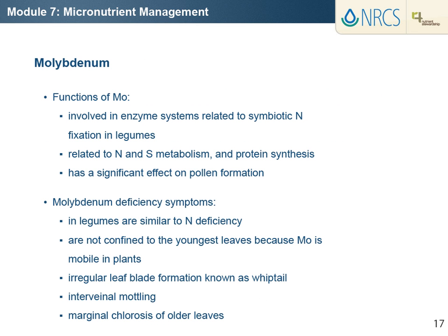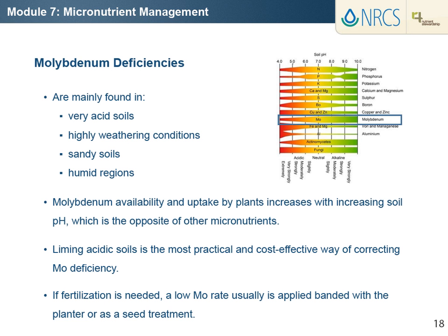Molybdenum is involved in enzyme systems related to symbiotic nitrogen fixation in legumes, nitrogen and sulfur metabolism, and protein synthesis. Molybdenum has a significant effect on pollen formation, so fruit and grain formation are affected in molybdenum-deficient plants. Because molybdenum requirements are very low, most plant species do not exhibit molybdenum deficiency. Deficiency symptoms in legumes mimic nitrogen deficiency because of the primary role of molybdenum in nitrogen fixation. Unlike most other micronutrients, molybdenum deficiency symptoms are not confined to the youngest leaves because molybdenum is mobile in plants.